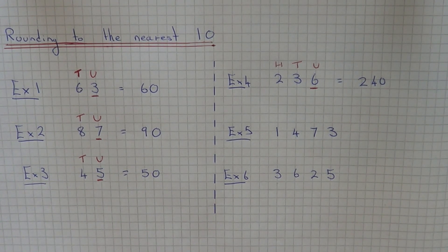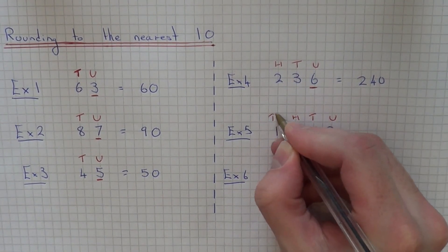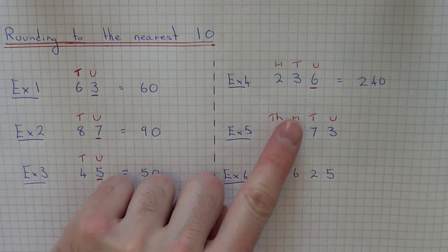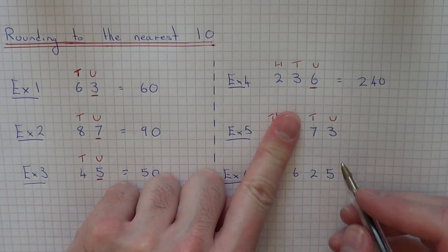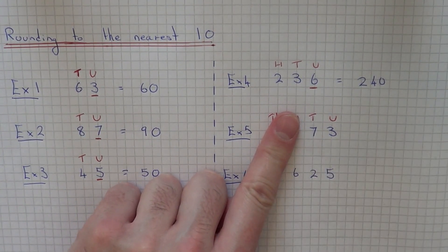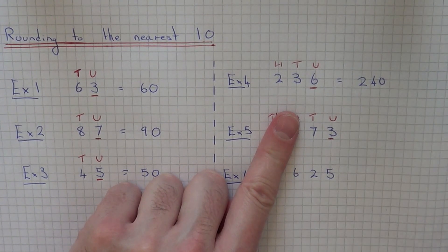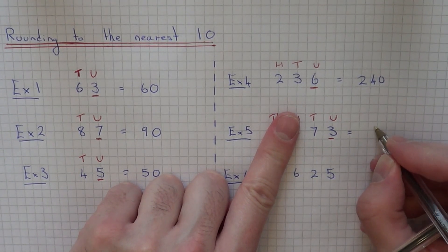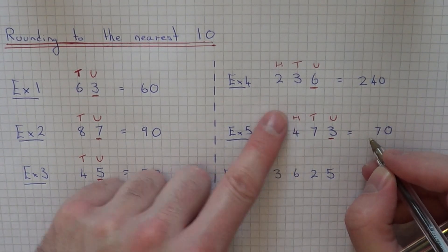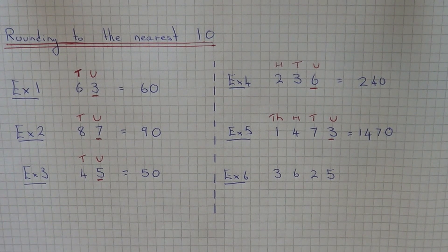Example five — this time we have one thousand four hundred and seventy-three. We have units, tens, hundreds, and thousands. We don't need to look at the thousands and hundreds — we just need to look at the tens. We have seven tens, so we've got two possible answers: it will either be seventy if we round it down, or eighty if we round it up. Look at the units column, which is a three. Since that is less than five, we're going to round the number down to seventy. Remember to copy the thousands and hundreds before it, so the final answer is one thousand four hundred and seventy.